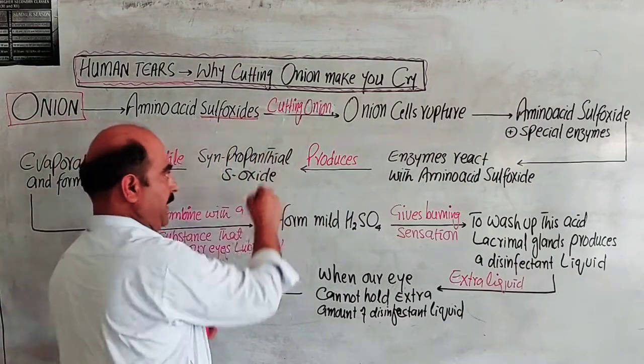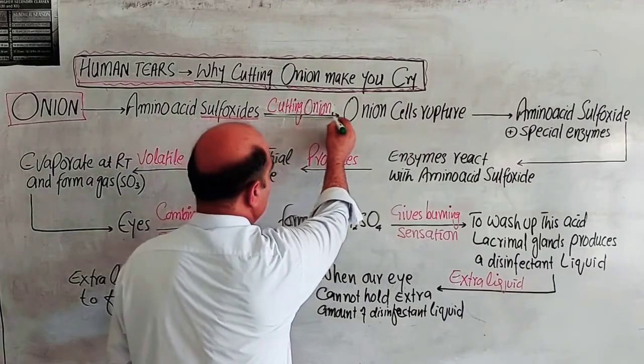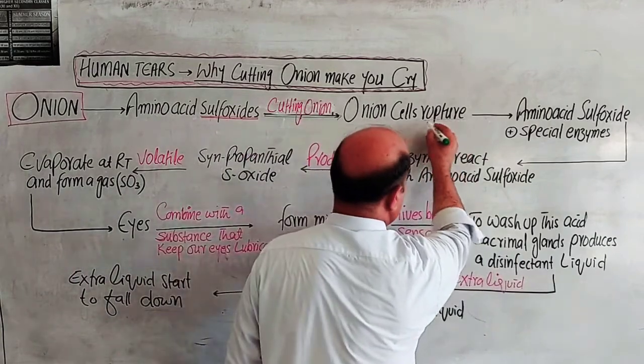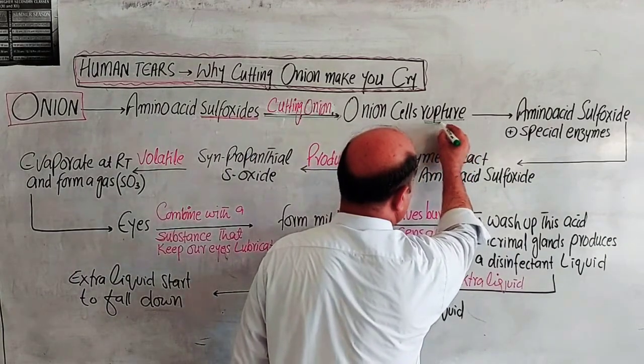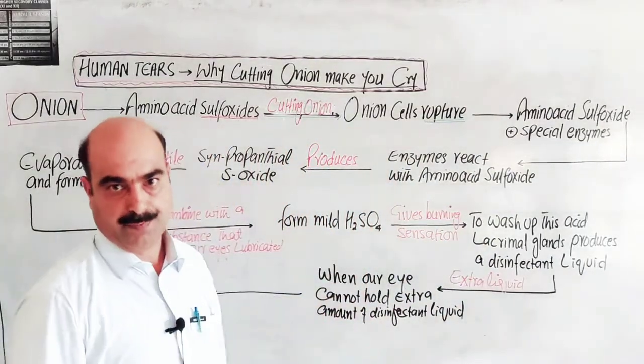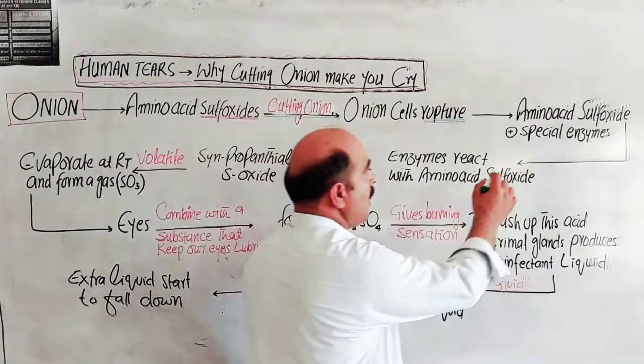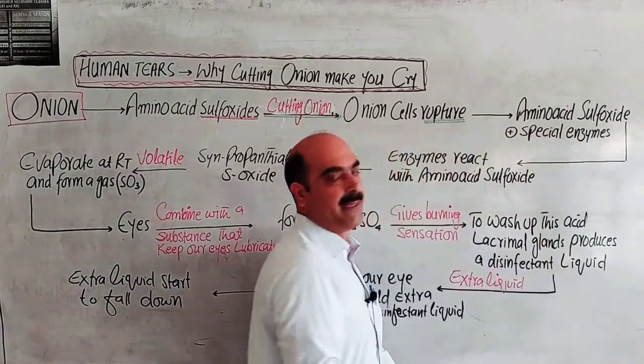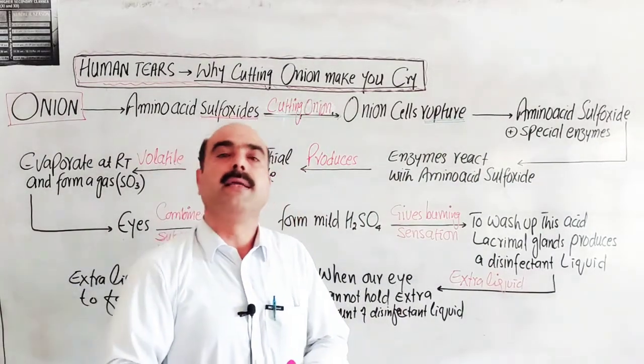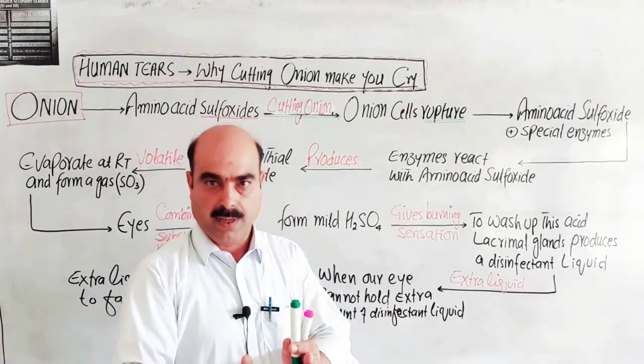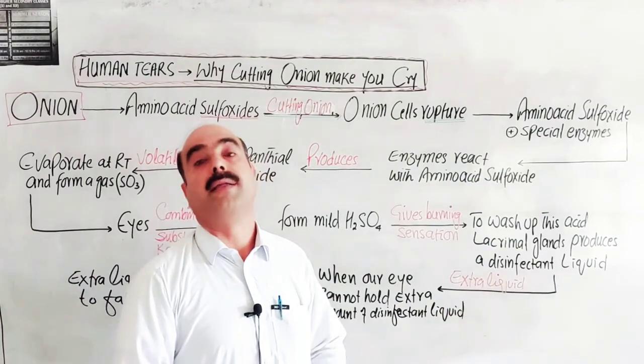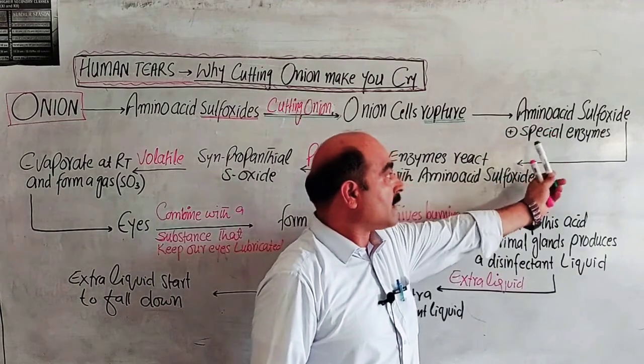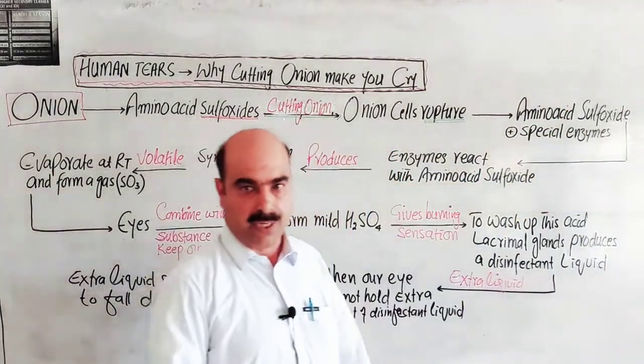When cutting onion, when you cut the onion, the onion cells rupture. When the cells rupture, it releases amino acid sulfoxide plus a special type of enzymes. When you cut, millions of onion cells rupture and release amino acid sulfoxide plus special type of enzymes.